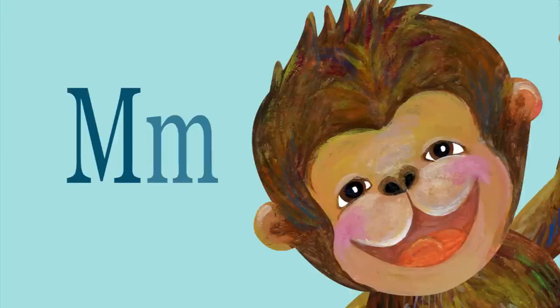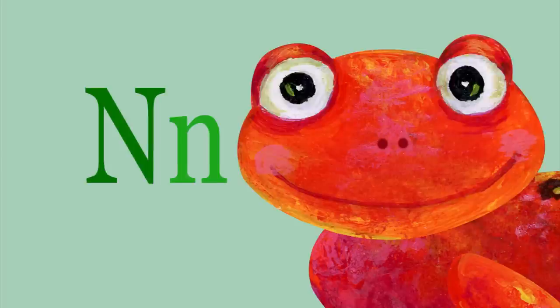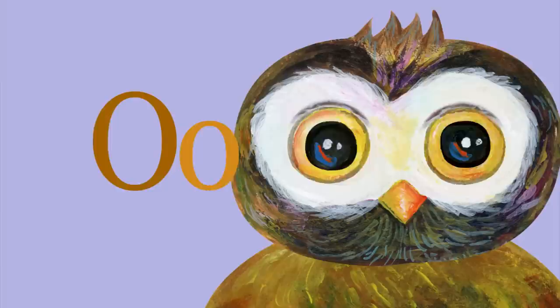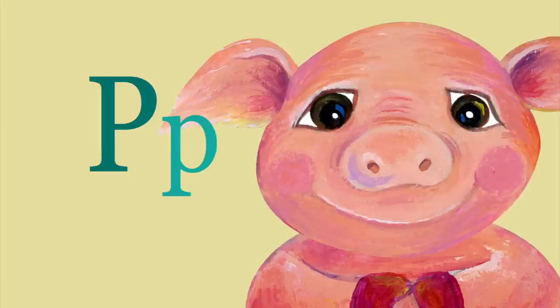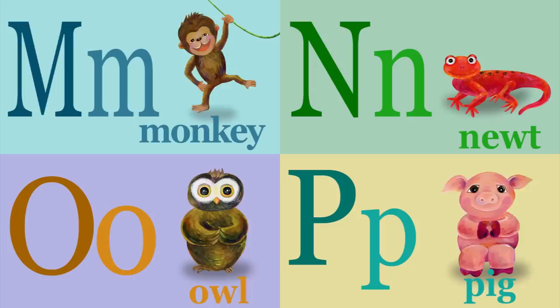M is for monkey, m-m-m-monkey. N is for newt, n-n-n-newt. O is for owl, o-o-o-owl. P is for pig, p-p-p-pig.